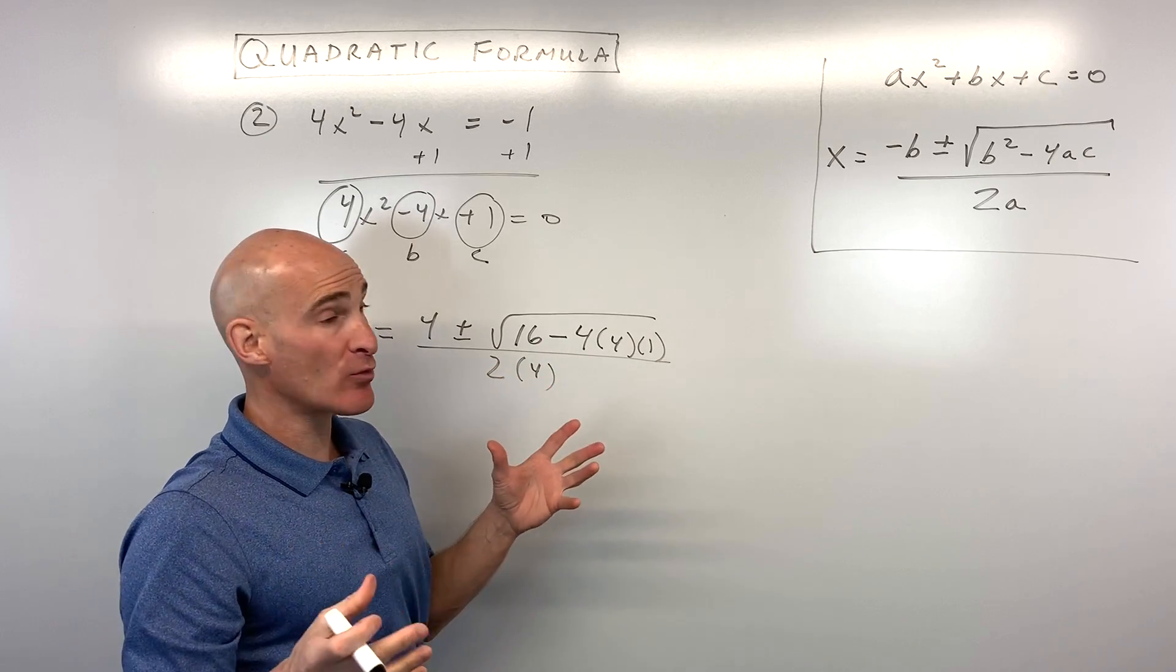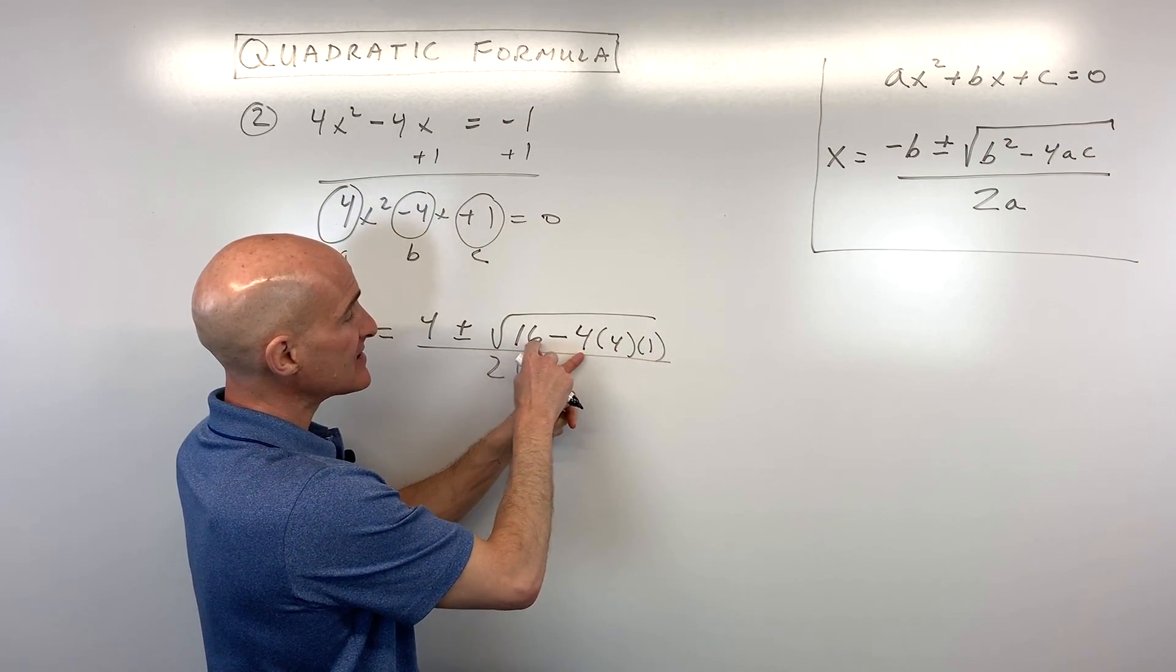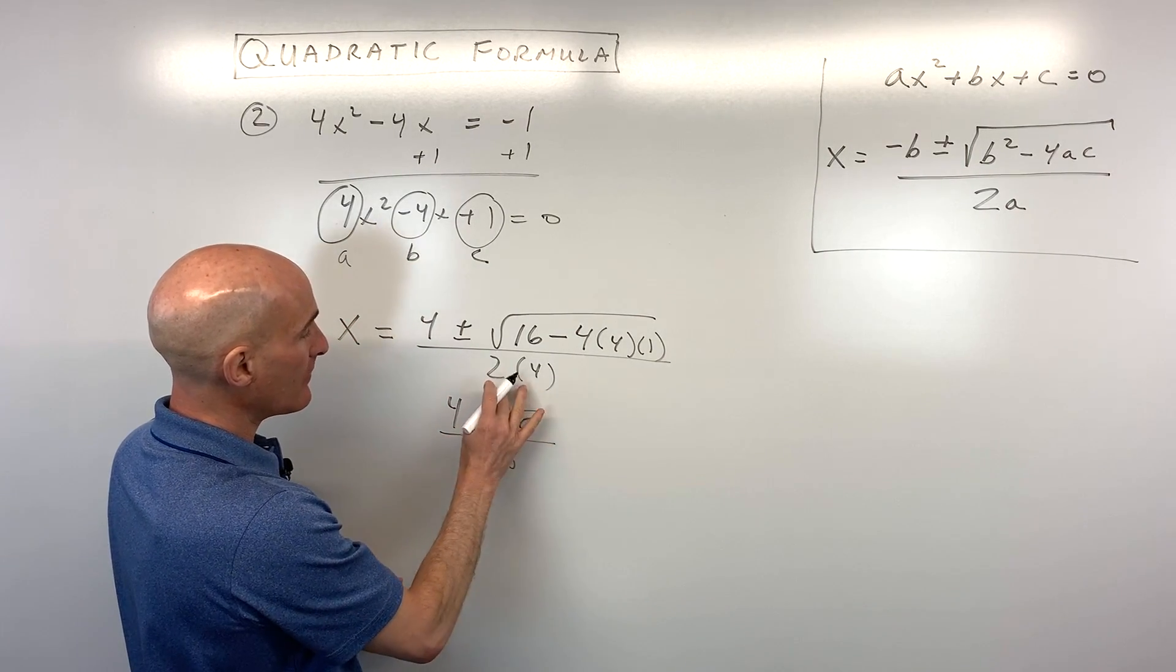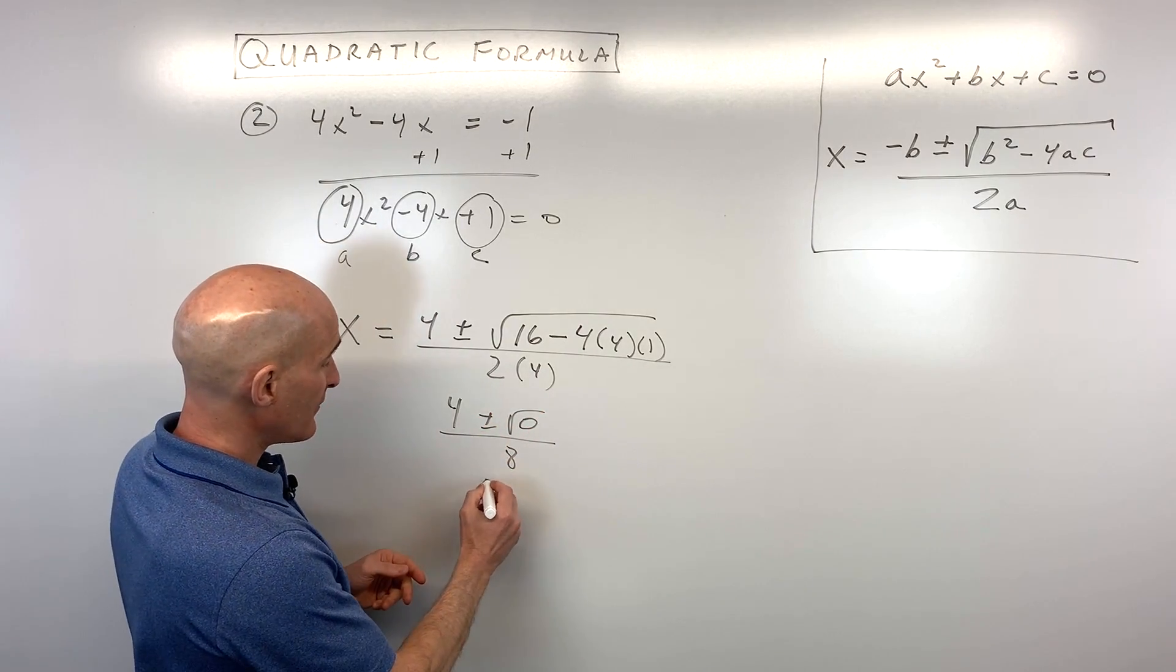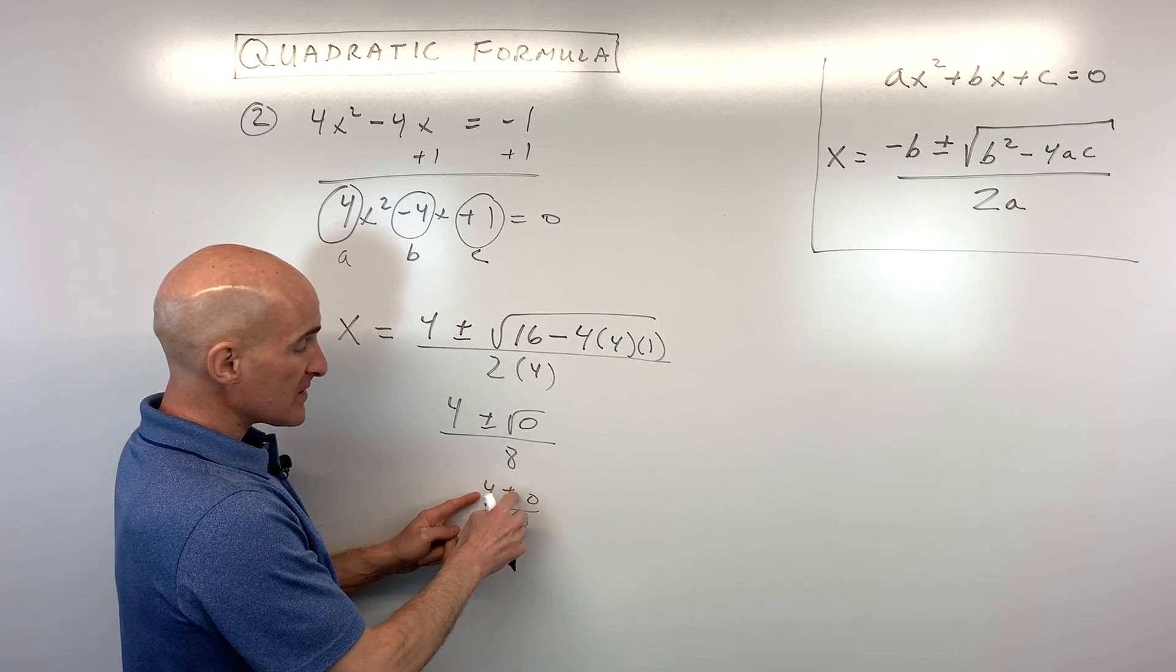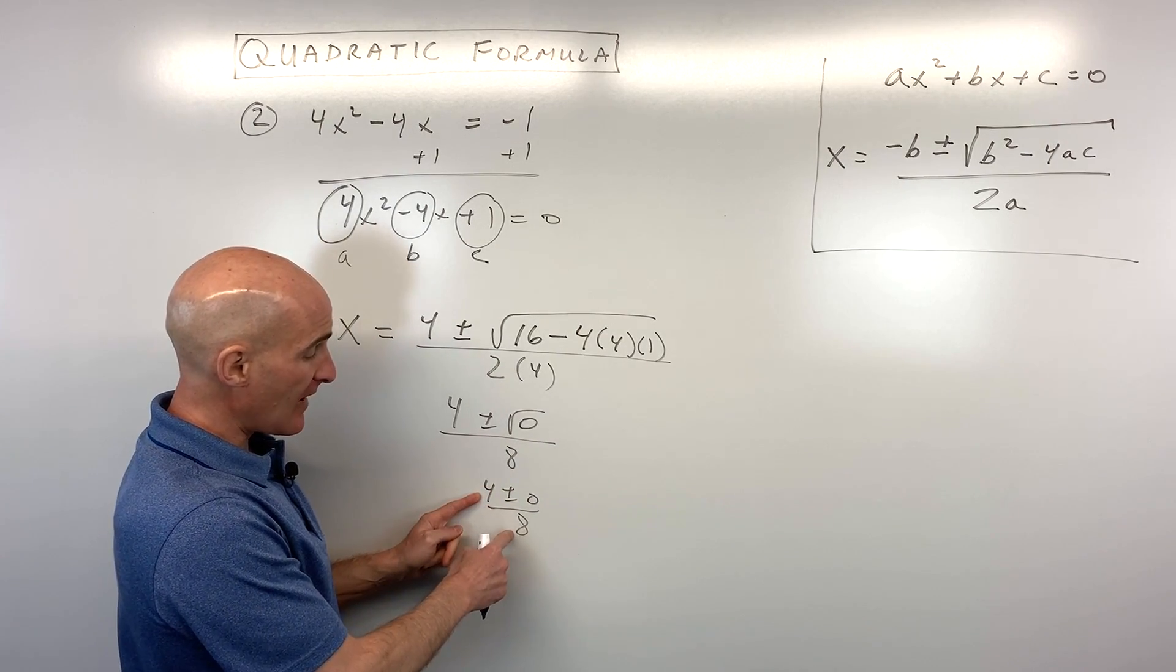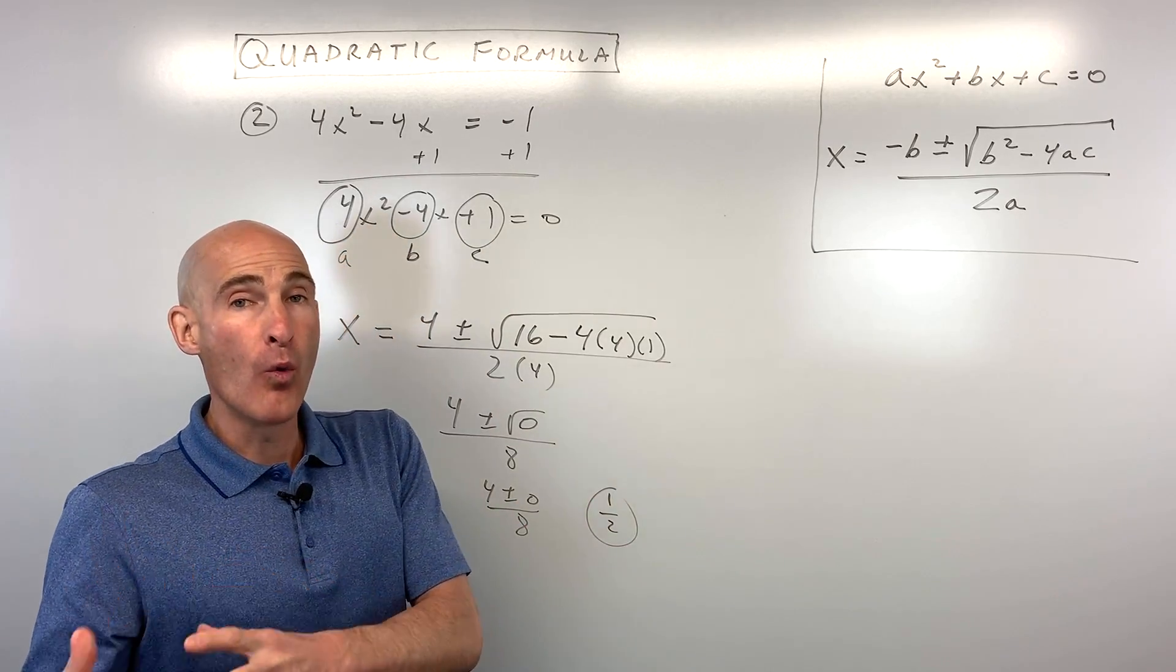Now, again, you want to start from the inside and work your way out. 4 times 4 is 16, times 1 is 16, 16 minus 16 is 0. So now we have 4 plus or minus the square root of 0, all divided by 8. Of course, the square root of 0 is really just 0. So this simplifies down to 4 plus or minus 0 divided by 8. 4 plus 0 is 4. 4 minus 0 is 4. So either way, we're getting the same thing for the numerator 4 divided by 8, which is 1 half. So in this case, we only got one solution.